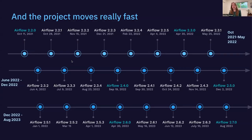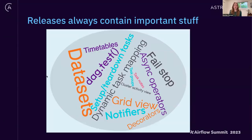The project also moves really fast. New Airflow releases are frequent and consistent — minor releases, especially in the last couple of years, come out every three to four months. Even with squishing everything together, we can only fit about the last two-ish years of releases on a slide. These releases are important leaps forward for the project. They contain pretty game-changing new features — things like dynamic task mapping, datasets, testing and debugging tools, UI updates, and way more. These things really change not just how you use Airflow and the day-to-day experience, but the actual use cases you're even able to implement.